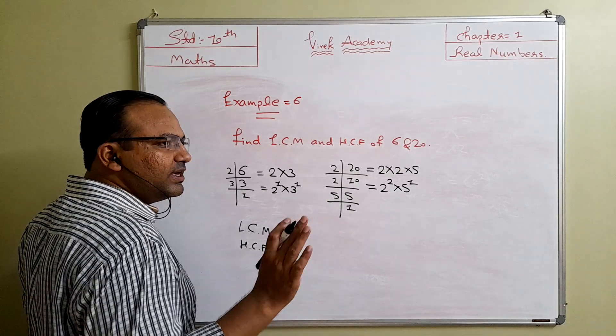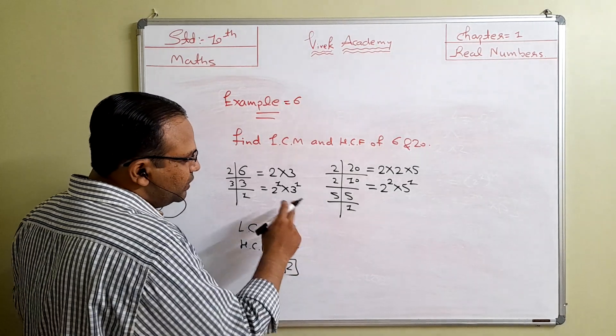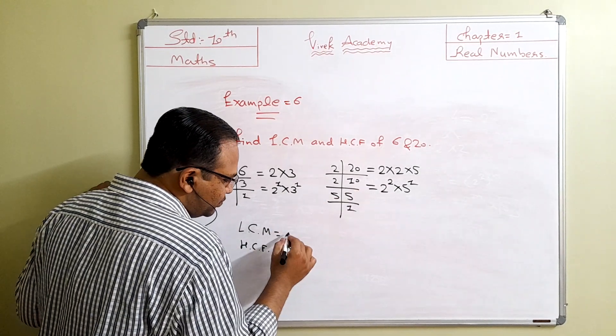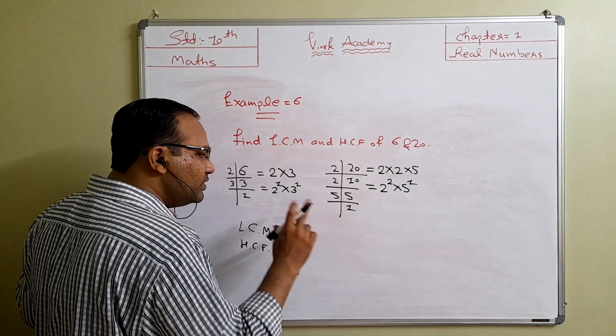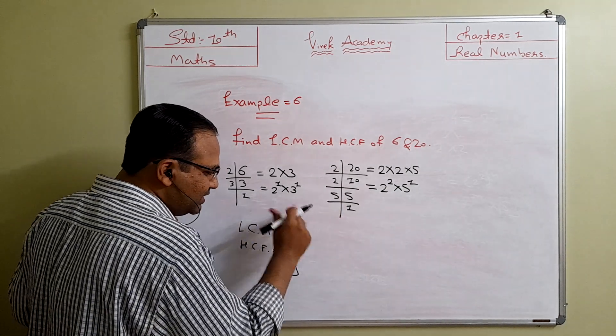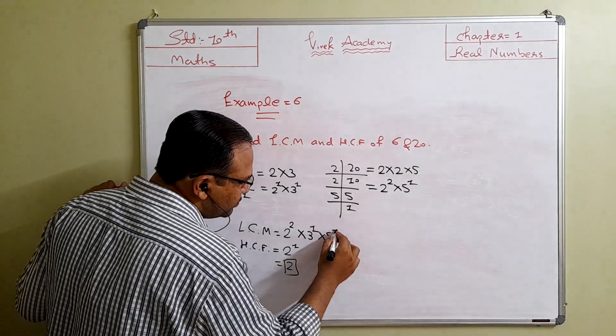For LCM, you have to take each and every possible factor with the maximum exponent. Here 2 appears in both, but the maximum exponent is 2 raised to 2. 3 is there - even if it's not common, we have to take it for LCM: 3 raised to 1. And 5 is also there, so we take 5 raised to 1.